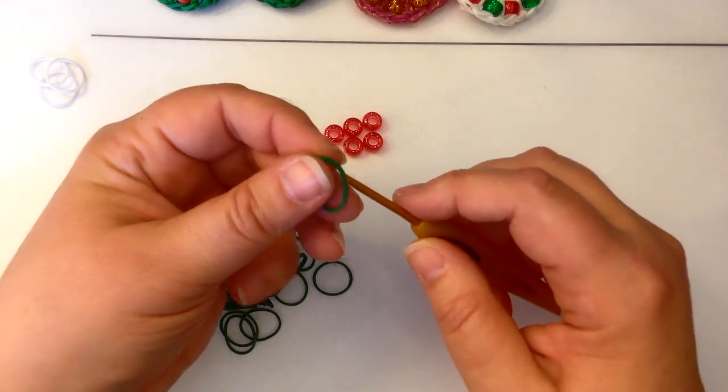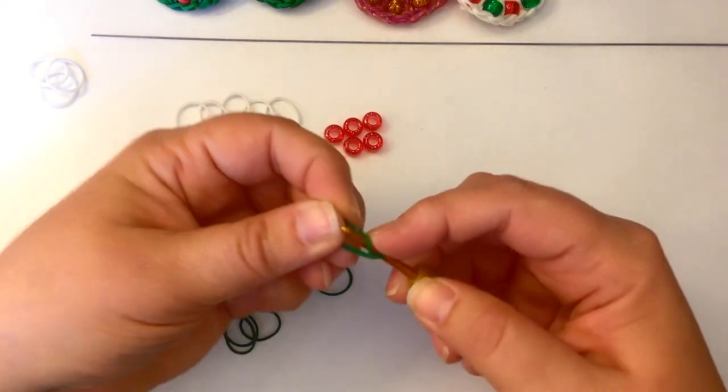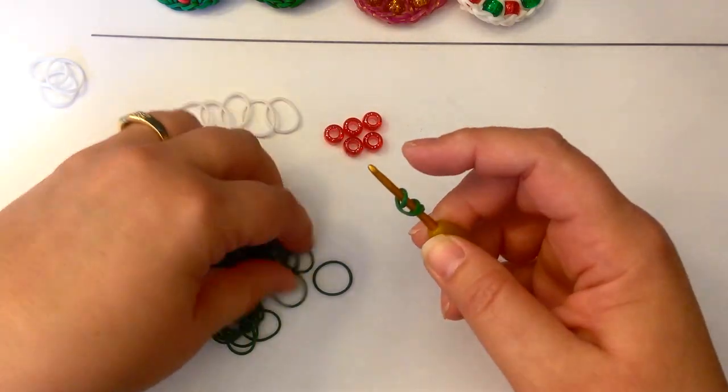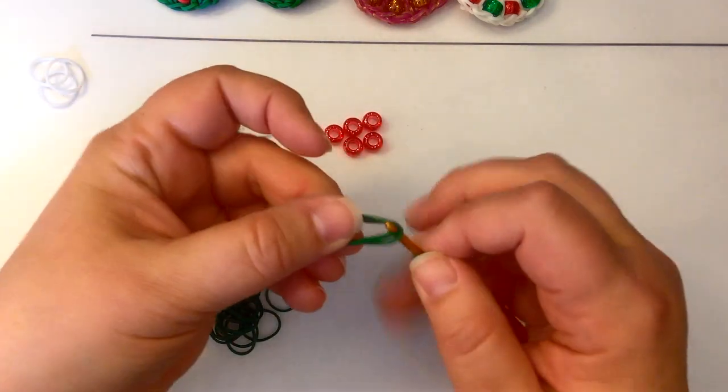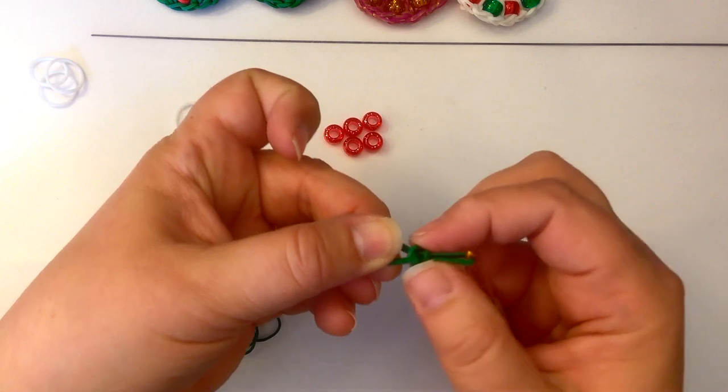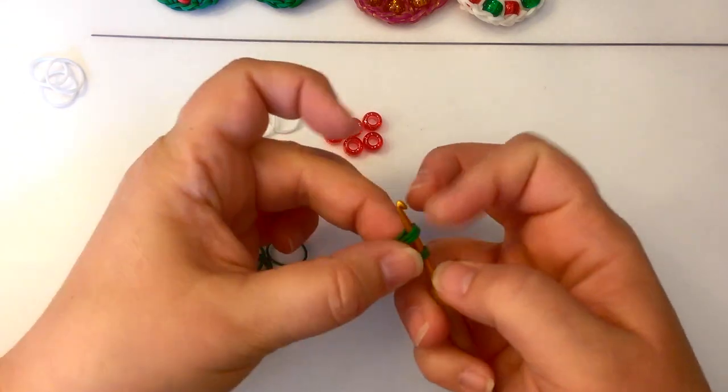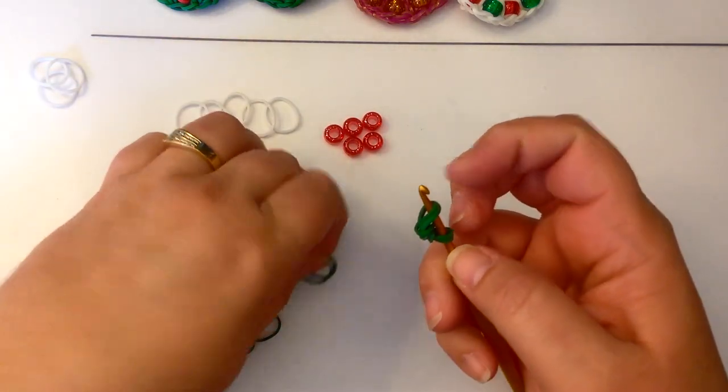We are going to do a combination today of beads and bands so that I can show you how to do both. I'm going to use five white bands and the rest are going to be green bands. You're going to take a single green band and you're going to wrap it around your hook once and twice.